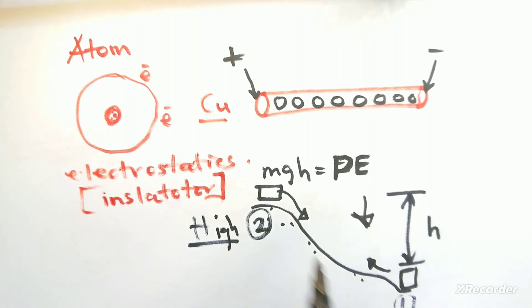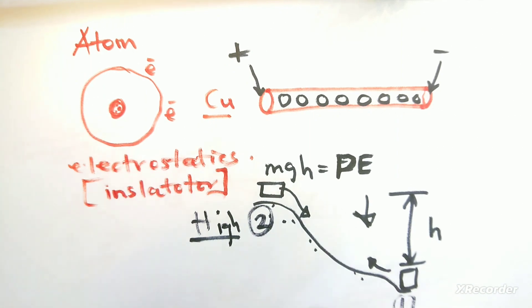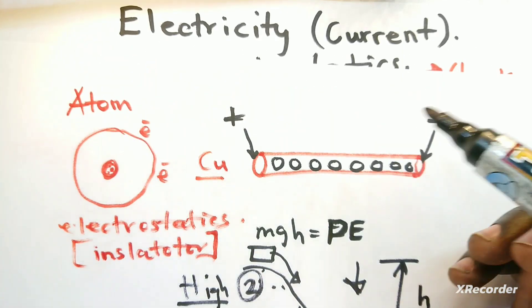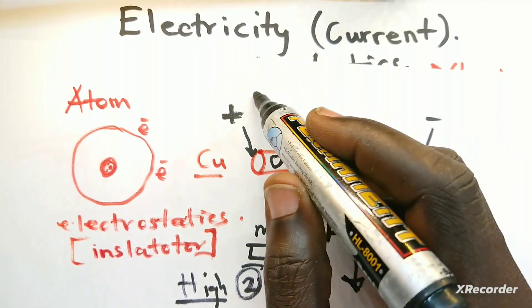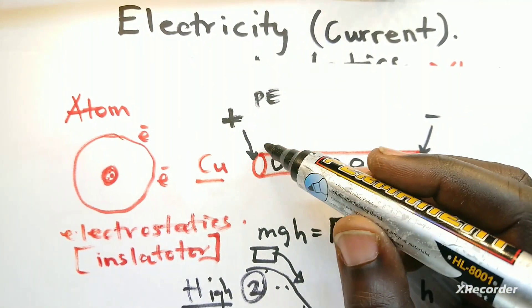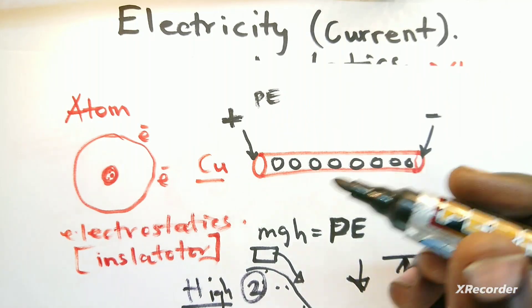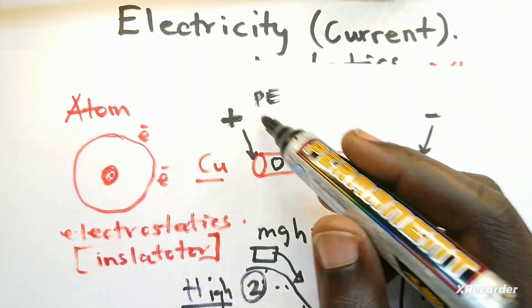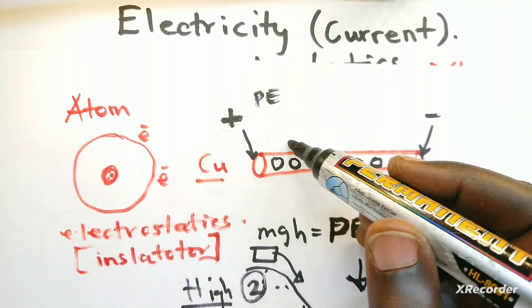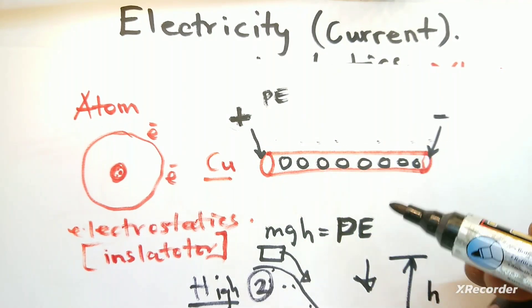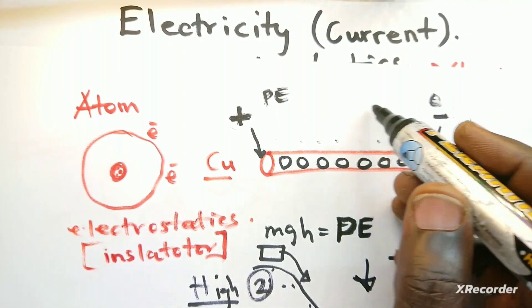That's the same idea when you apply a voltage across the wire—that is potential energy. So you find that positive charges on the positive side will flow to the negative side, while electrons flow from the negative side to the positive side.